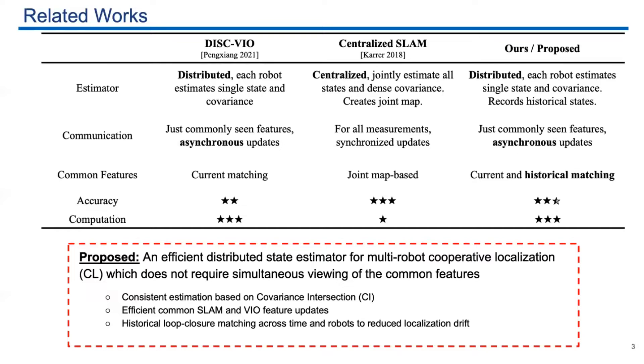In this paper, we improved our previous work by considering historical matching. By doing this, we improved the accuracy while we inherited the distributed setting of DISC-VIO. We proposed an efficient distributed state estimator for multi-robot cooperative localization, and this algorithm doesn't require simultaneous viewing of the common features. We leveraged covariance intersection to achieve the distributed setting, and we further investigate the ways to efficiently process the common SLAM and the common VIO features. We used loop closing across time and robots to reduce the localization drift.